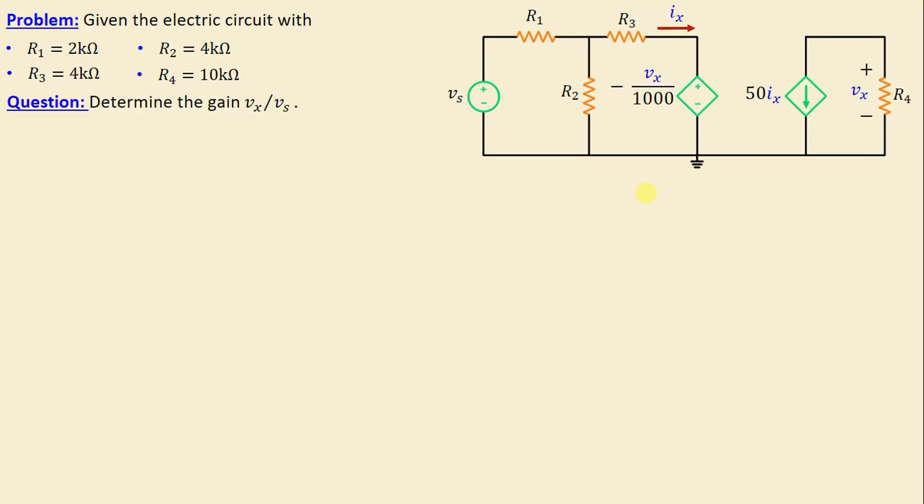Let's consider the transistor amplifier circuits consisting of four resistors labeled R1 through R4, along with one independent voltage source Vs. Additionally, we can observe the presence of dependent sources, especially a voltage-controlled voltage source and a current-controlled current source.